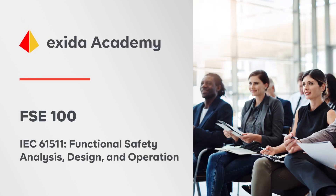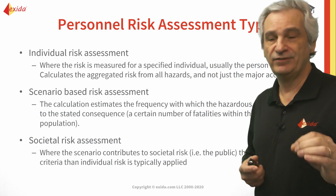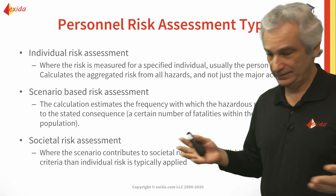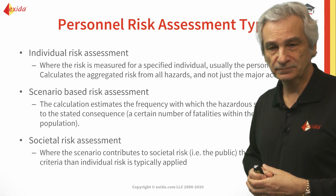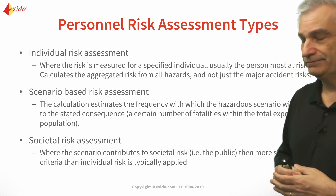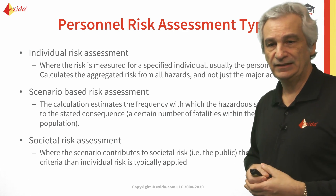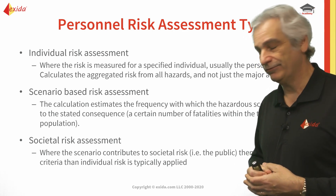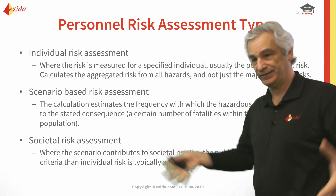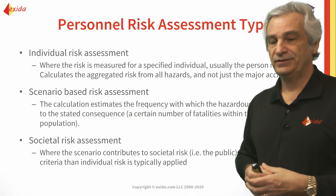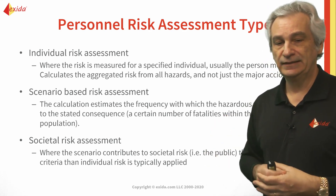When looking at personnel risk assessment types, we can look at individual risk, where the risk is measured for the specific individual — usually the maintenance or operations person out in the field who is most exposed. Then we look at scenario risk, examining the frequency with which a hazardous scenario will occur and the consequences in terms of potential fatalities for a given population. Societal risk is where this contributes to risk that goes beyond the plant fences. We want to minimize the time our plant people spend in exposed or potentially dangerous areas.